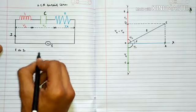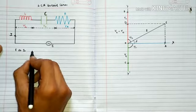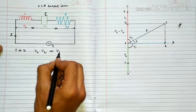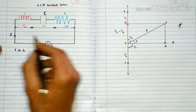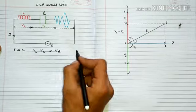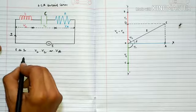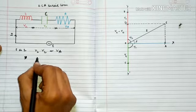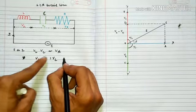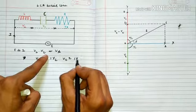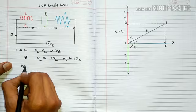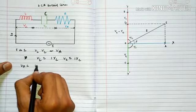VL, VC, and VR are the potential differences across the inductance, capacitor, and resistor. We have VL is equal to I×XL, VC is equal to I×XC, and VR is equal to I×R.